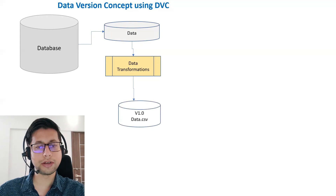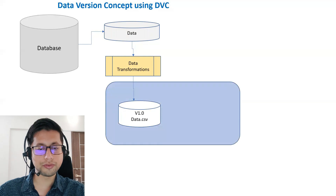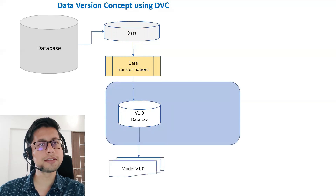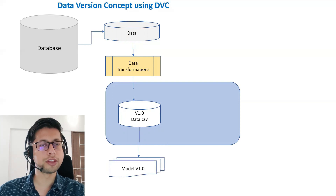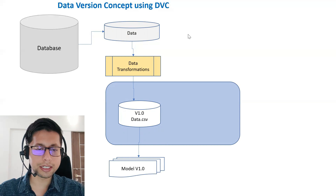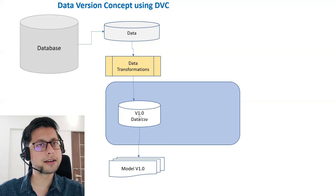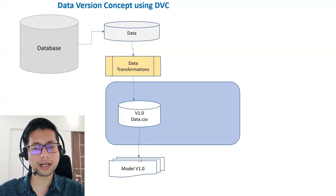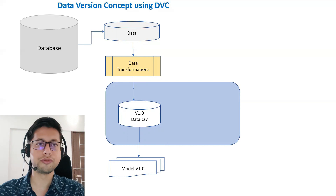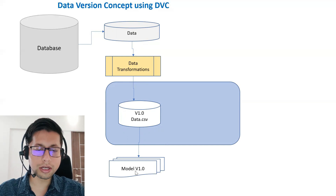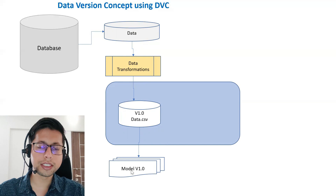After transformations are done, you create a final version of data — we name it version 1.0. With that version 1.0 you create certain experiments and on top of that it finally generates the model. We name it model version 1.0. So the basic lifecycle steps are done and we have achieved model version 1.0.